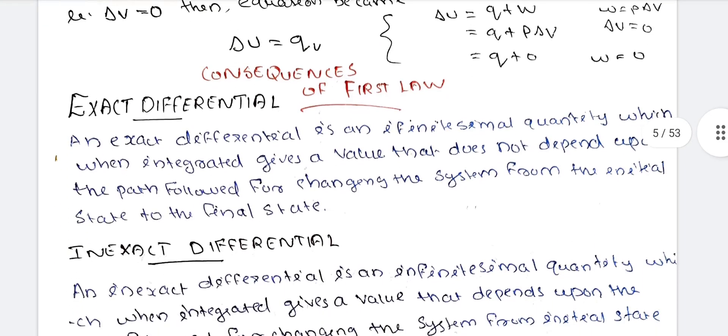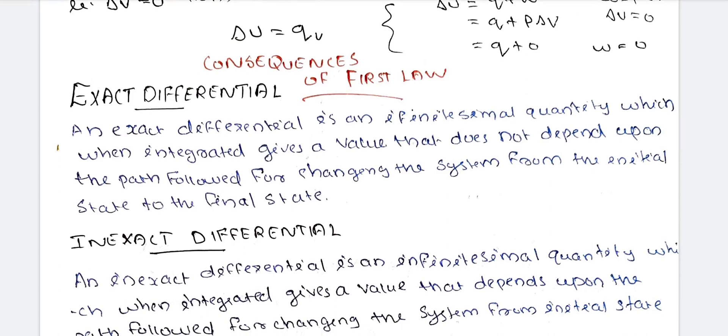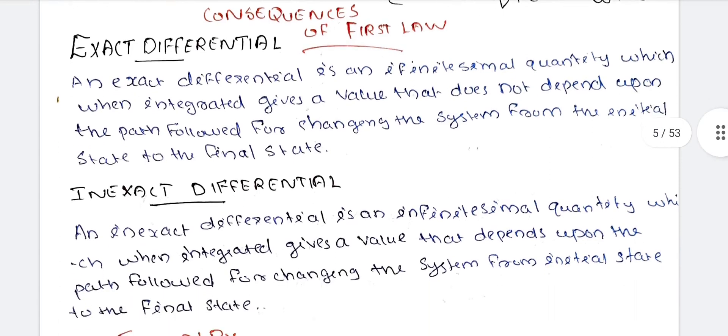Now we discuss the consequences of the First Law. There are two consequences: one is exact differential and the other is inexact differential. An exact differential is an infinitesimal quantity which, when integrated, gives a value that does not depend upon the path followed for changing the system from initial state to final state.